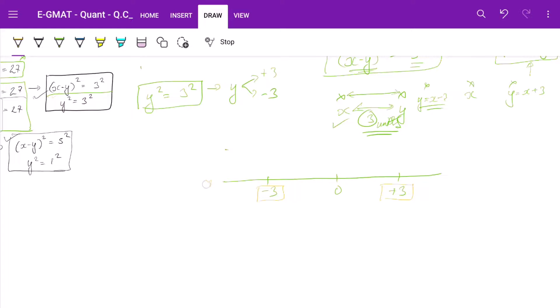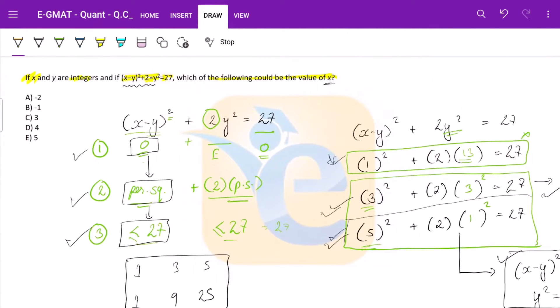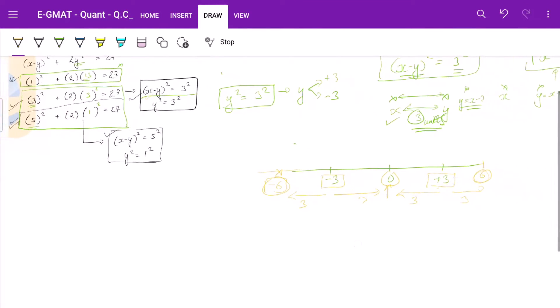Either y can be here or y can be here and we know that distance from x is 3 units. So what are the possible values? x can be here at minus 6, 3 unit distance here or 3 unit distance here at 0. Again, from this point, 3 unit distance here at 0 or 3 unit distance this side at plus 6. So what are the possible options? Values of x, 6, 0 or minus 6? Do we have an option 6, 0 or minus 6? No. We do not have. So basically there is no answer from this case.